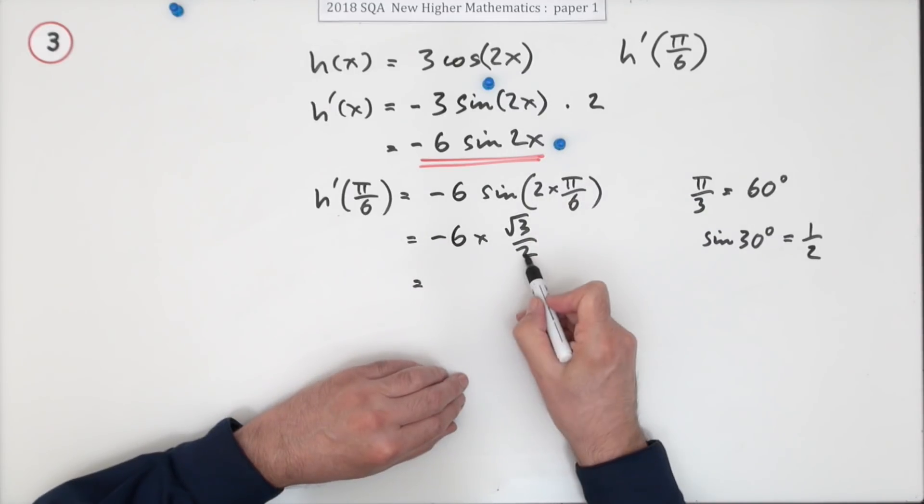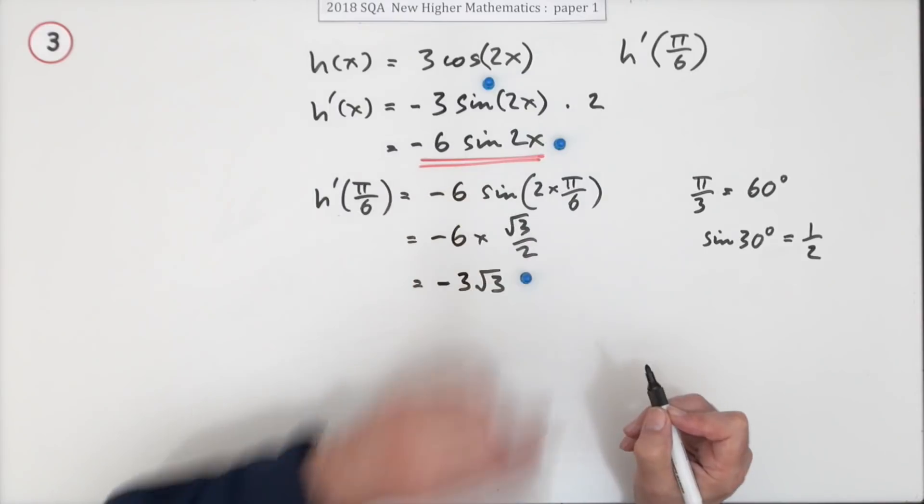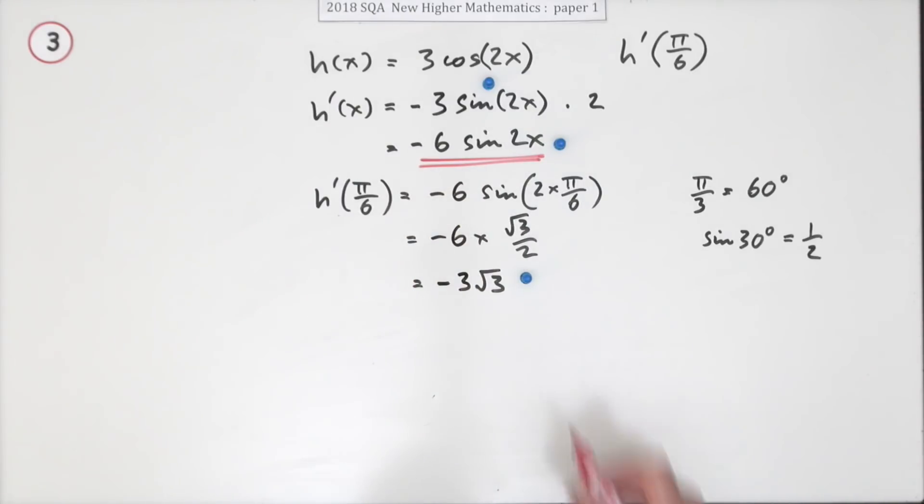So multiplying that out, 2 cancels into that 3 times, so it's negative 3√3 for the last mark. And it finally works.